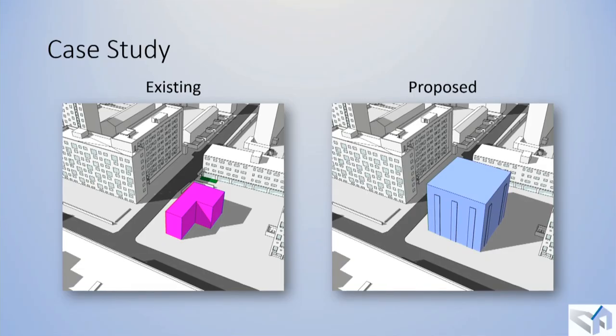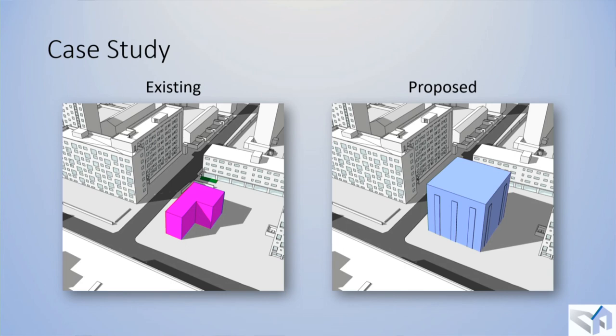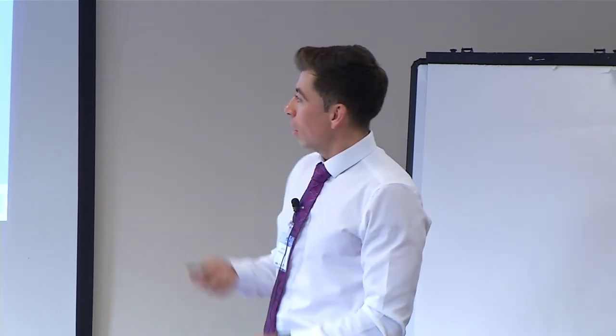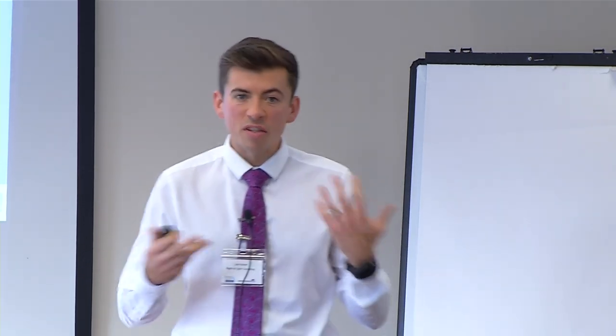I'll start with this simplistic case study. On the left we've got our existing massing; on the right, our proposed. For each and every project, we use architects' drawings, z-mapping or point cloud surveys to create a 3D model. We're looking at the impact on neighbouring buildings by building them into a 3D model and running them through software, rather than taking specific measurements of light on site. So existing on the left, proposed in blue on the right — it's obviously getting much larger.